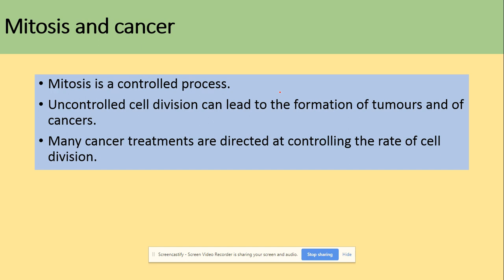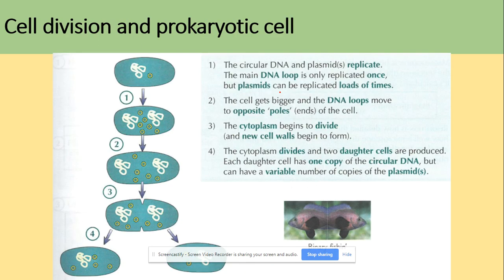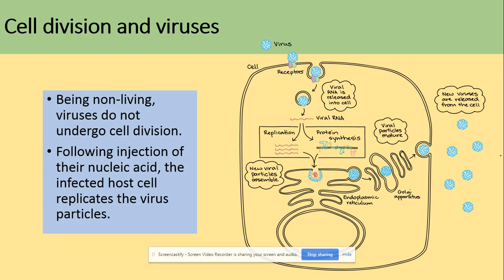To recap: mitosis is a controlled process, but uncontrolled cell division leads to cancer. Finally, cell division in prokaryotic cells involves binary fission: the single DNA molecule and plasmids replicate, separate to opposite poles, and cytokinesis takes place to produce two daughter cells. The AQA specification also includes division of viruses, which is covered further in the cell section.